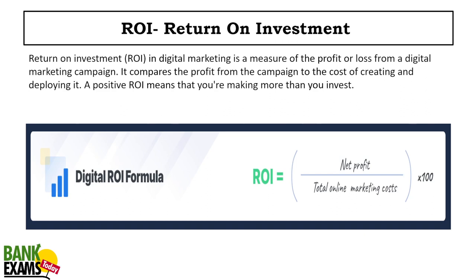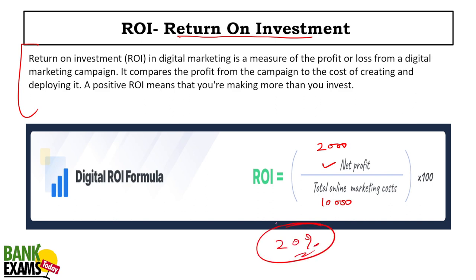ROI — Return on Investment. In digital marketing, ROI is a measure of profit or loss from a digital marketing campaign. For example, if you made a net profit of 2,000 rupees after investing 10,000 rupees in marketing, your ROI is 20%. Please remember the formula.